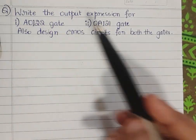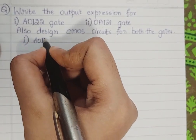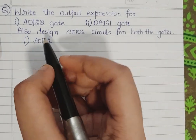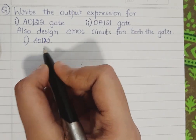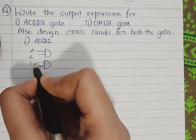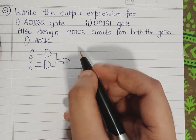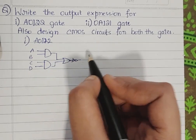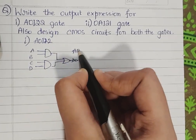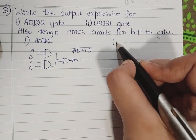First let us start by considering the AOI22 gate. It is first AND, then OR, then inverter — so it's two-input AND, two-input AND, then OR, then inversion. Let the inputs be AB and CD going to the OR gate, and then inversion. So the expression for this gate structure is AB plus CD, whole bar.